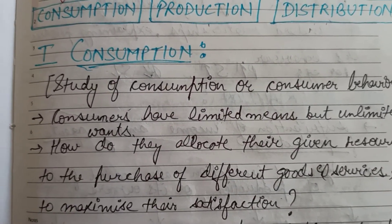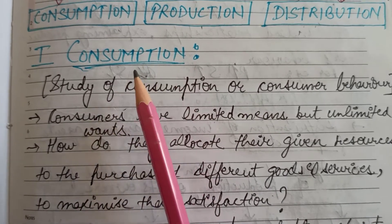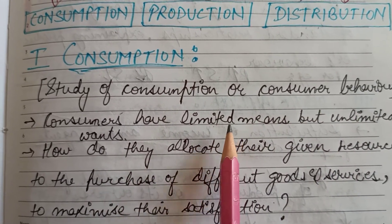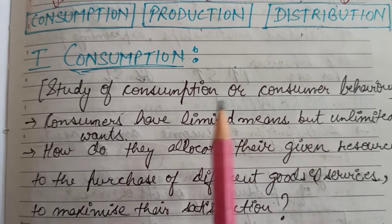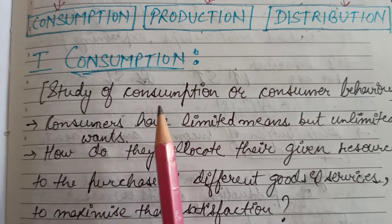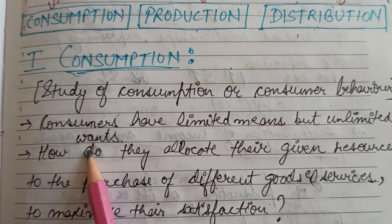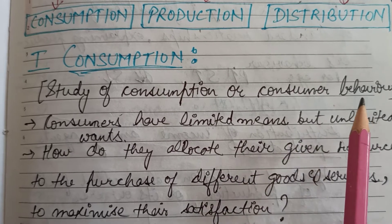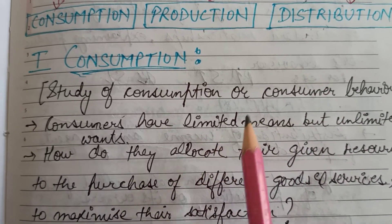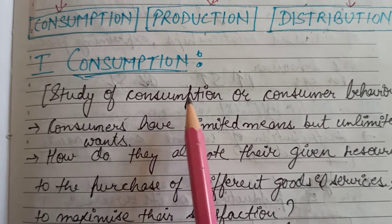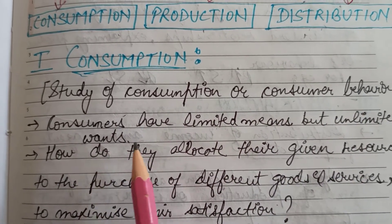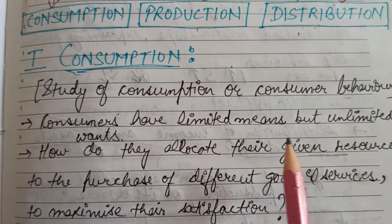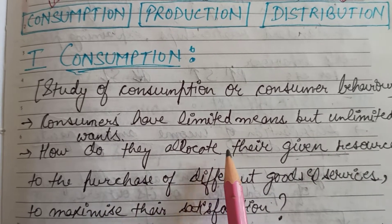Now what is the consumption component? In this we will study consumer behavior — that is, how a consumer behaves in relation to their limited means or limited resources when their wants are unlimited. For example, I have limited means of rupees 1000 but my wants are unlimited; I want to purchase many items. This type of question is covered under consumer behavior — that is, how consumers allocate their given resources and in what uses they will allocate those resources.